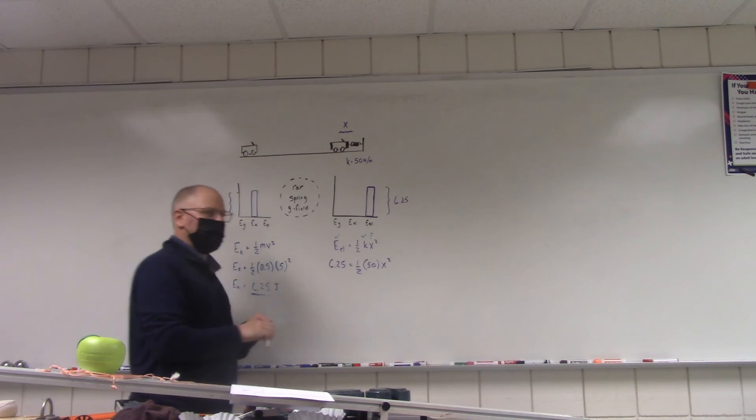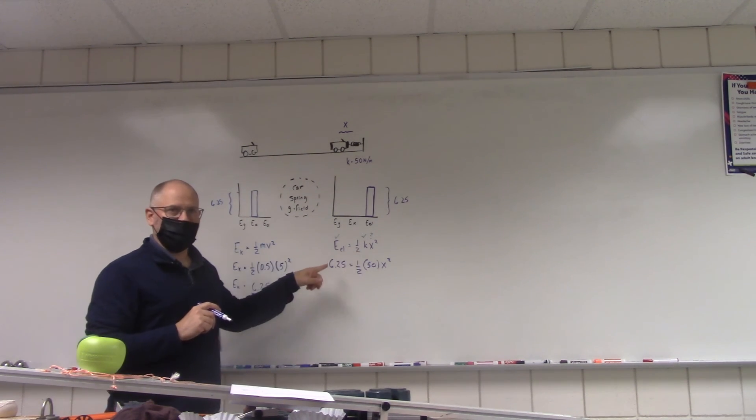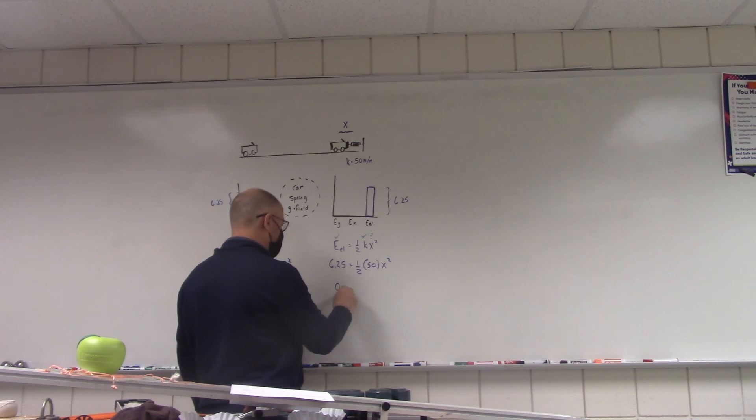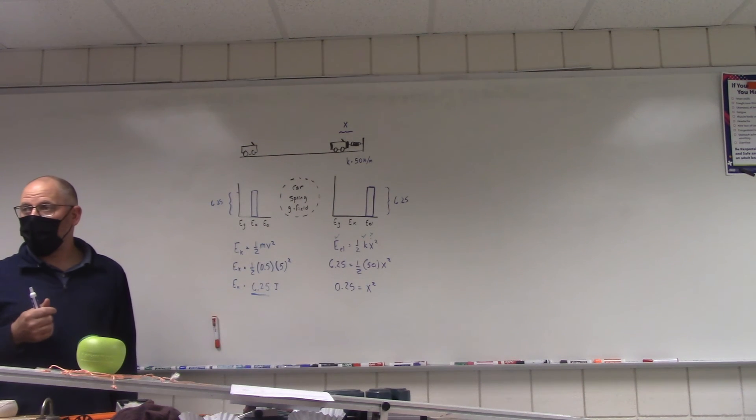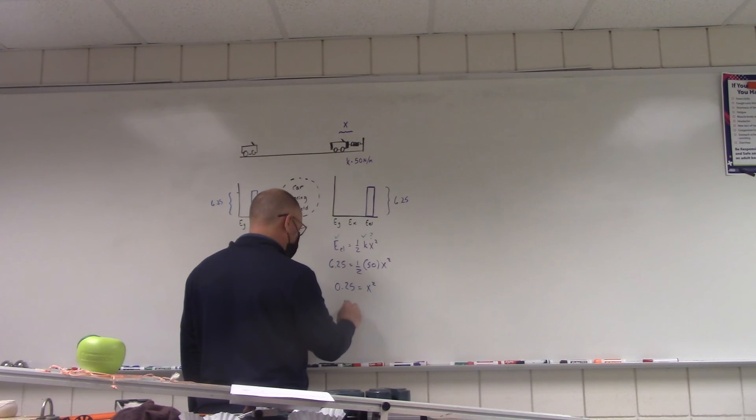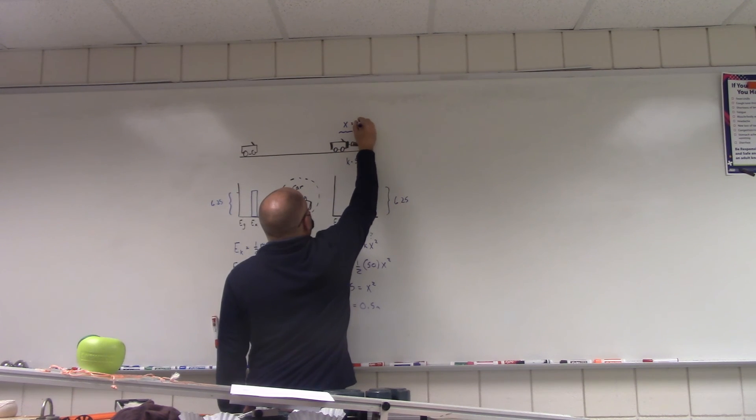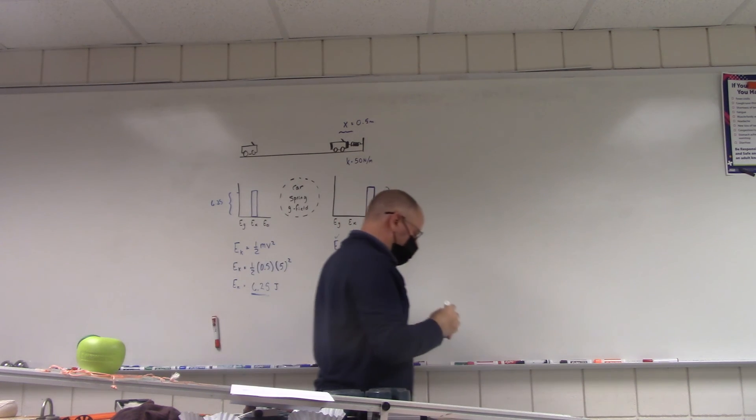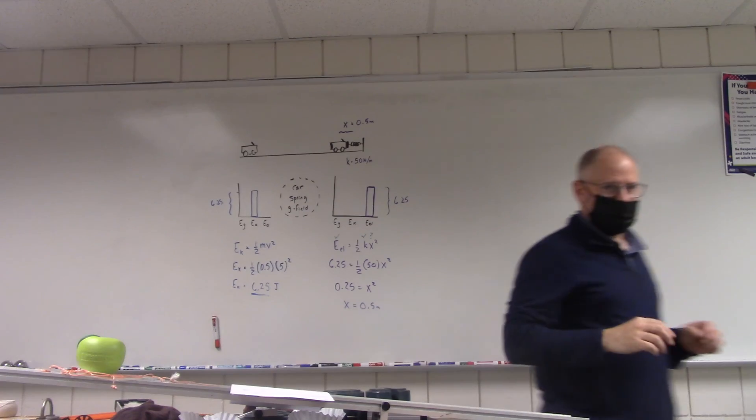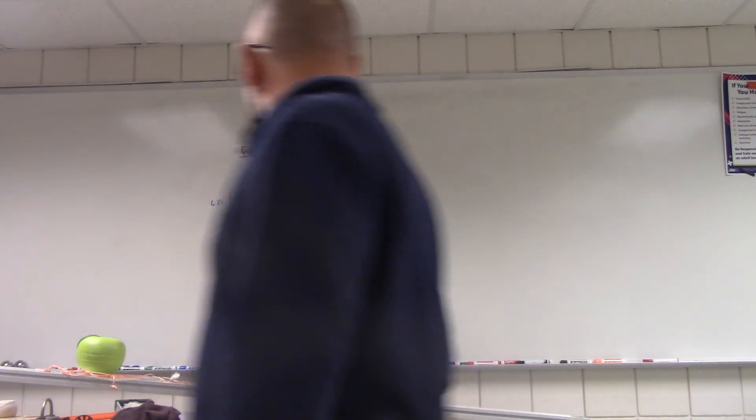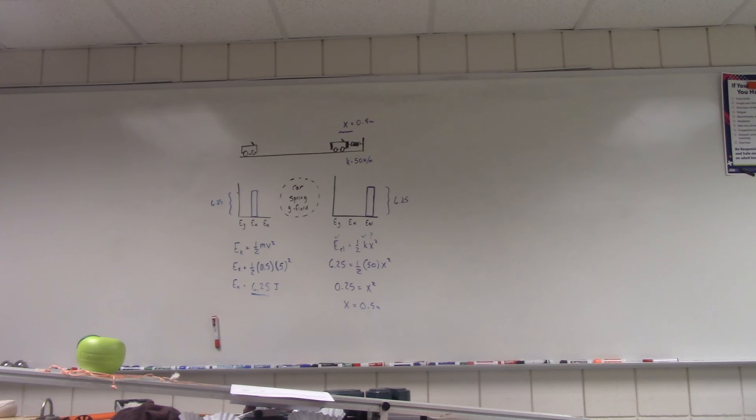Now I can just plug and chug. 6.25 is equal to one-half times fifty times x squared. I'm going to multiply 6.25 times 2 and I'm going to get 12.5. Fifty divided by 12.5 is four, so 0.25 is equal to x squared. Square root both sides. Square root of 0.25 is 0.5, which means it compressed 0.5 meters. How does that sound?